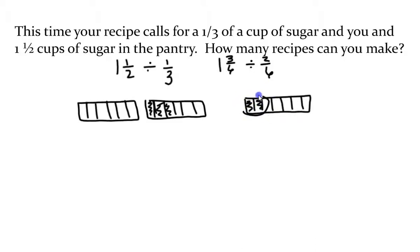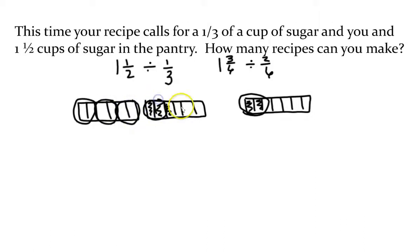So we're trying to find out how many of these fit into this. Since this would all be colored in, this would be one. Another group of two sixths can fit here — that's two, three, and four. If I were to circle both of them they would be five, but I only have half of it. So my answer is four and a half recipes that I could make.